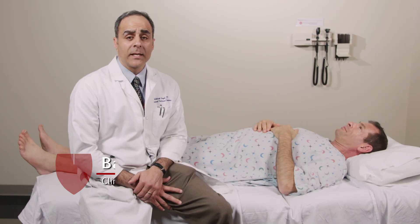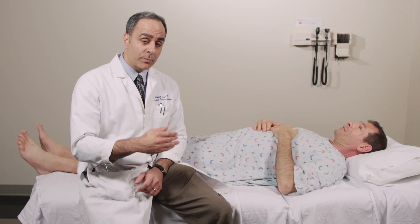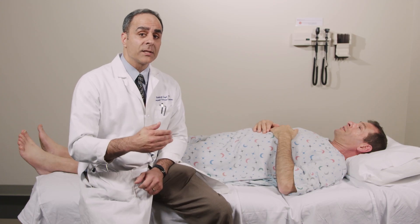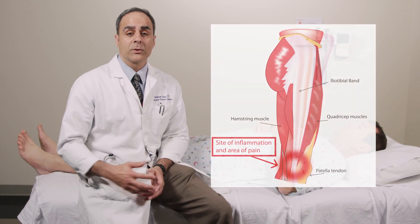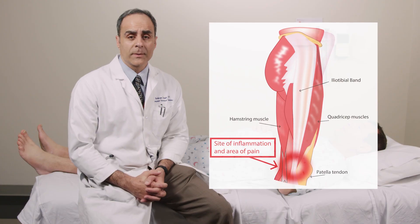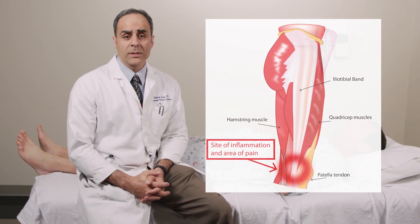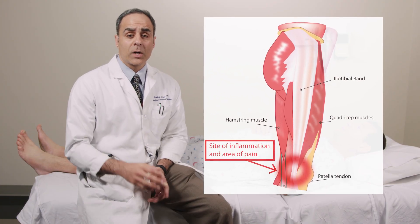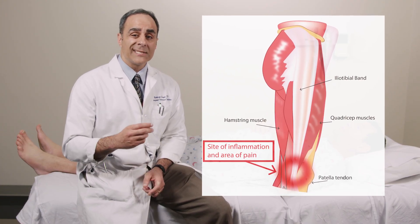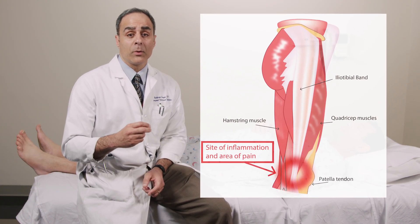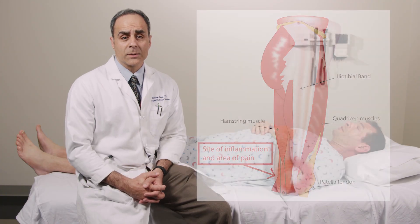This is a quick video on iliotibial or IT band syndrome. Iliotibial syndrome is a syndrome by which pain is elicited on the lateral aspect of the knee and radiates up towards the hip. This is very common in runners and is usually caused by a tense iliotibial band from overuse.